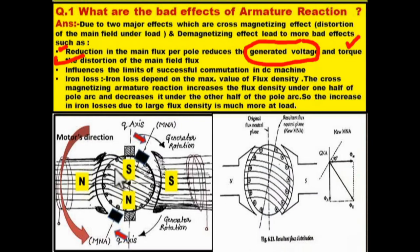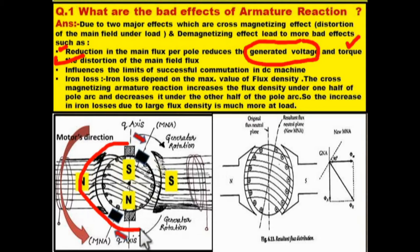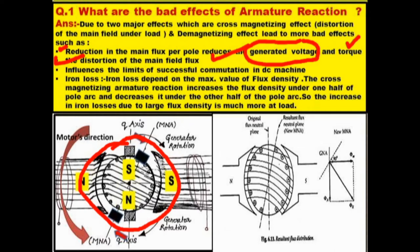The second bad effect is the distortion of the main field flux. You can see on the screen that the flux waveform is tilted and shifted — the waveform is distorted. The resultant flux density waveform becomes degraded, and distortion occurs in the main field flux.